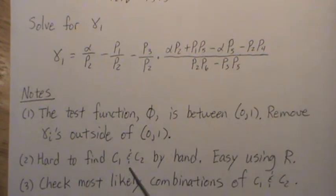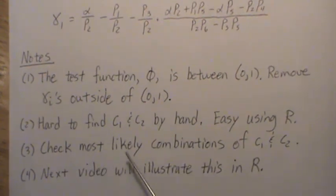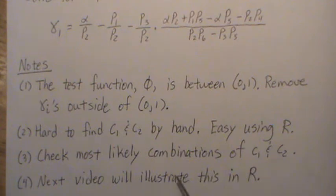Now, again, it's hard to find C1 and C2 by hand. It's easy in R. And we check most likely combinations of C1 and C2. And so what I do in the next video is if we assume lambda 1 is the true value, we would expect certain values for that test statistic. And then if lambda 2 is the true value, then we would expect certain values for our test statistic.